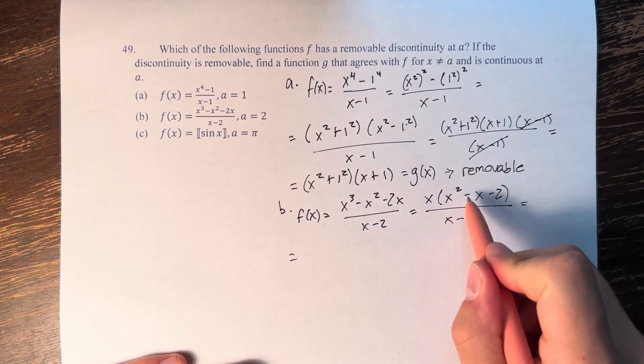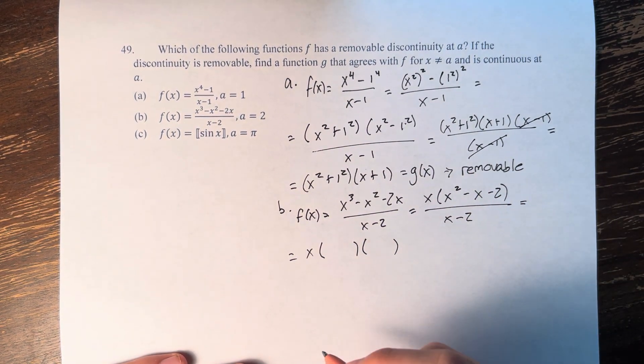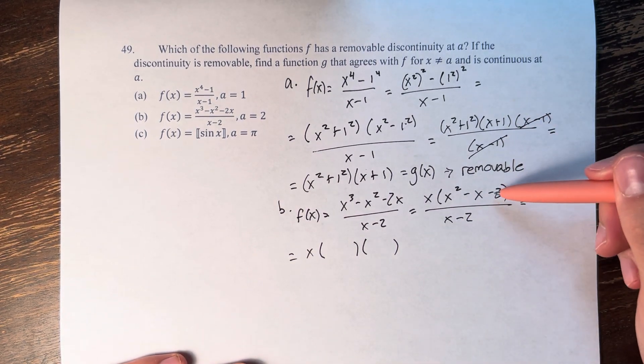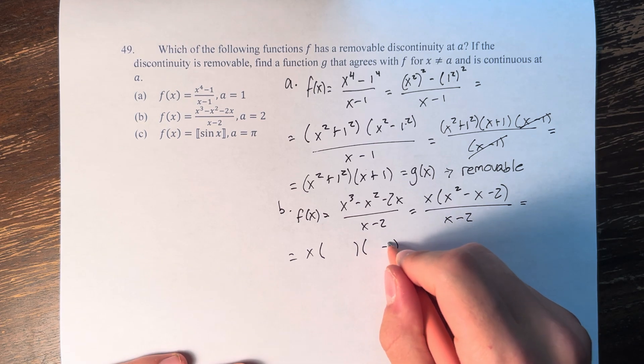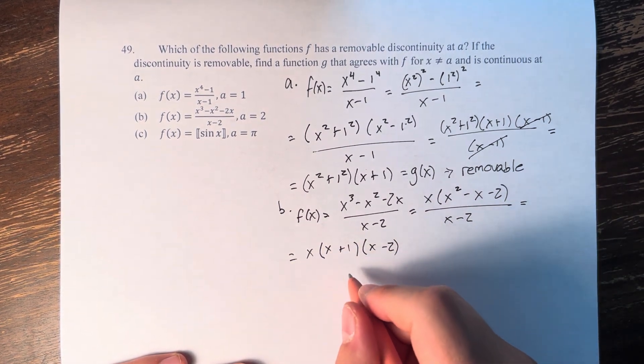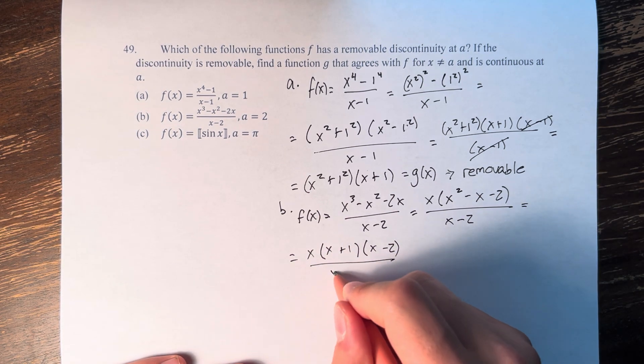Now we want to factor this. So we have x times, factoring this trinomial, we're going to have two separate terms. Two numbers that multiply to negative 2 add to negative 1. That is negative 2 and positive 1. We have x plus 1 times x minus 2 over x minus 2.